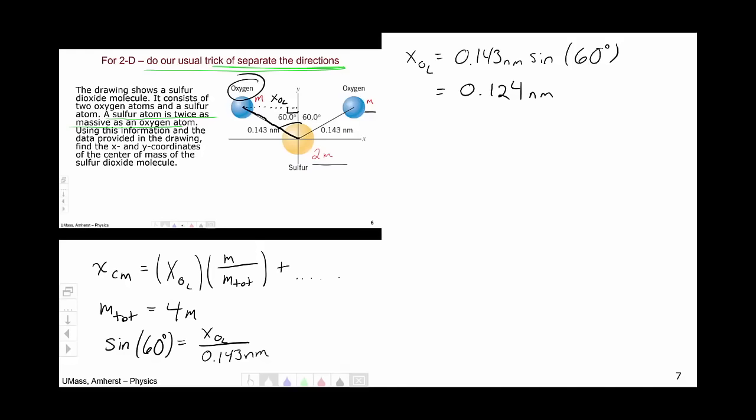If we go and look at our picture again, we see that the position of this oxygen atom on the left is in fact negative. My calculator will never give me that. I have to just look at my picture and know to put the negative sign in my calculation.